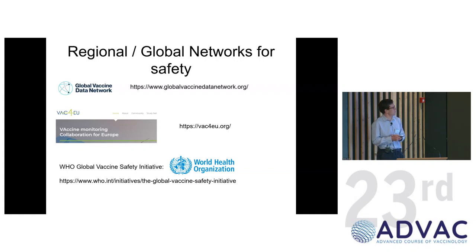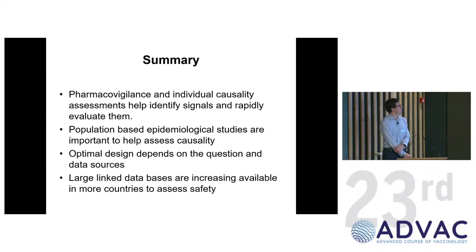There's a few networks of global safety networks that I mentioned here that are worth looking into and very useful collaborations because vaccines are global, vaccine safety is global. Talking to other countries, knowing what they're looking at is really important. We're connected in with the Global Vaccine Data Network. There's a project in Europe, VAC4EU, and the WHO global vaccine safety initiatives, which are really helpful to have. So in summary, pharmacovigilance and individual causality help identify signals and rapidly assess them. But you need these population based studies that are very important for assessing that causality. The optimal design will depend on that question and the data sources you have. But the self-controlled case series often is a great design for anything that has clustering. Going forward, more and more large linked databases are going to be available in many more countries. So using those further is going to be really important in more countries. So I think that was my last slide. I've had bonus slides, but I won't go into those. I'll finish there. You can look at those on your own time. Thank you.